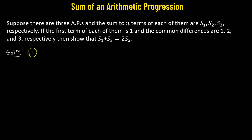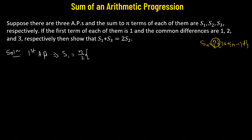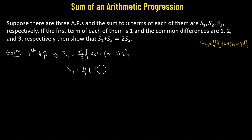Let's consider the first AP. The sum up to the nth term uses the general formula Sn, which is given by n over 2 multiplied by 2a plus n minus 1 times the common difference d. For the first AP, the first term is 1 and common difference is 1, so S1 equals n over 2 multiplied by 2 plus n minus 1, which simplifies to n over 2 multiplied by n plus 1. Let this be equation 1.